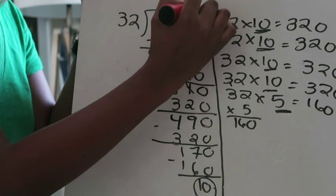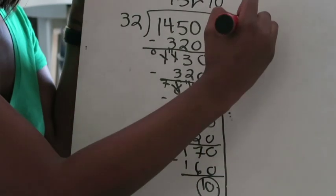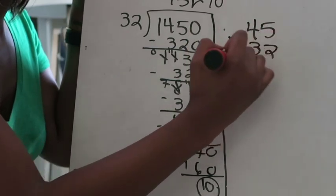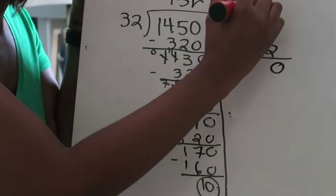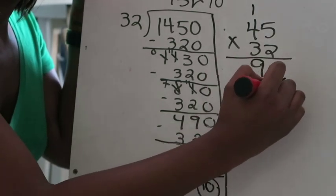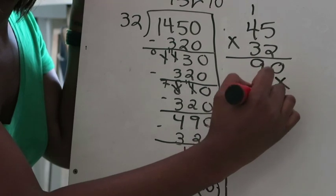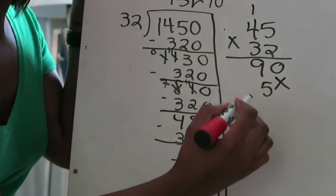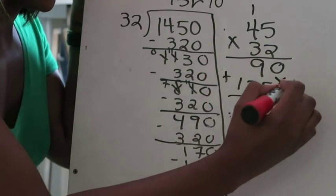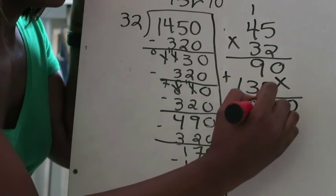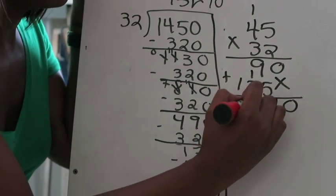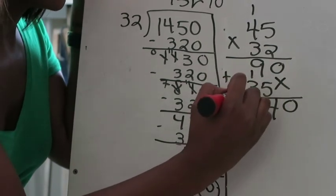I'm going to check my answer by multiplying 45 times 32. 2 times 5 is 10, 2 times 4 is 8 plus 1 is 9. Placeholder. 3 times 5 is 15, 3 times 4 is 12 plus 1 is 13. Now you're going to add. 0, 9 plus 5 is 14, 3 plus 1 is 4, and 1 plus nothing is 1.